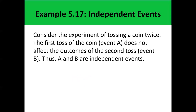Consider the experiment of tossing a coin twice. The first toss does not affect the outcomes of the second toss. For example, in the first toss we get a tail — the probability is 0.5. When we toss the coin a second time, the probability of getting a tail is still 0.5, regardless of what happened in the first toss. There is no change in probability. So getting a tail on the first toss and getting a tail on the second toss are examples of independent events.